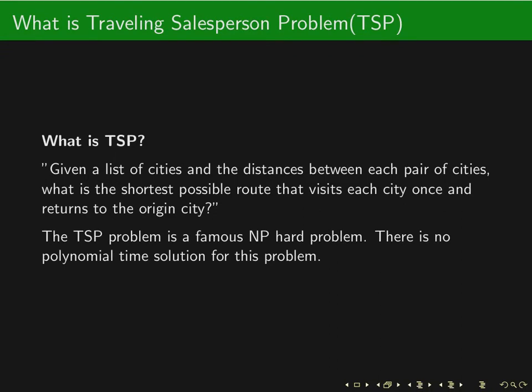If you are given a list of cities and the distances between each pair of cities — or it can be the cost of going from one city to another — we want to find the shortest possible route or the shortest possible cost that visits each city once and returns to the original city. The TSP problem is a very famous NP-hard problem which cannot be solved in polynomial time.